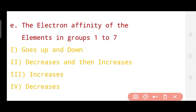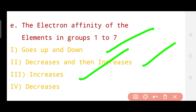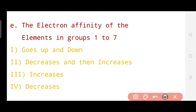The last question of this video is about the electron affinity of elements in group one to seven. Whether the electron affinity goes up and down, decreases then increases, increases, or just decreases when moving from group one to seven. The correct answer is option three — electron affinity increases. So the electron affinity of elements in group one to seven increases.